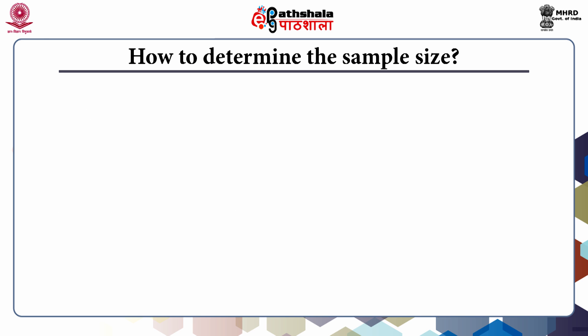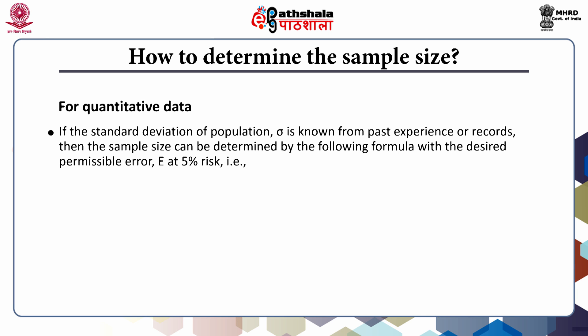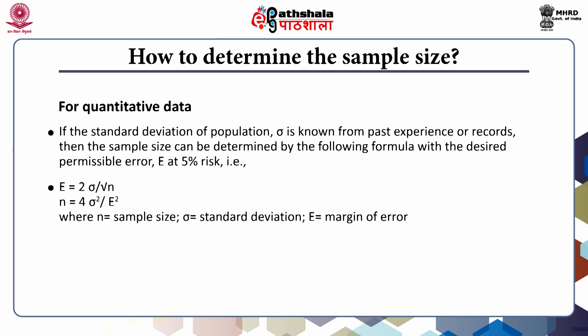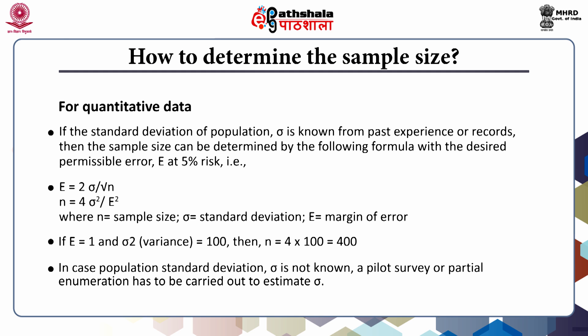How to determine the sample size? For the determination of a sample size, the following methods are recommended. The first one is for quantitative data. If the standard deviation of the population, sigma, is known from past experiences or records, then sample size can be determined by the following formula with the desired permissible error: E equals 2 sigma by root N, from which N comes to be 4 sigma squared by E squared. Here N is the sample size, sigma is the standard deviation, and E is the margin of error. If E equals 1 and sigma squared equals 100, then N equals 400. In case the population standard deviation sigma is not known, a pilot survey or partial enumeration has to be carried out to estimate sigma.